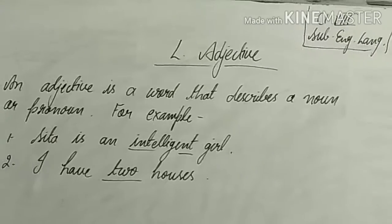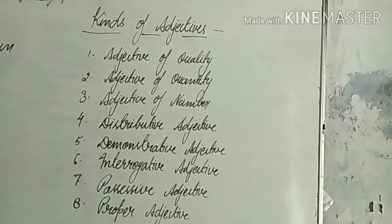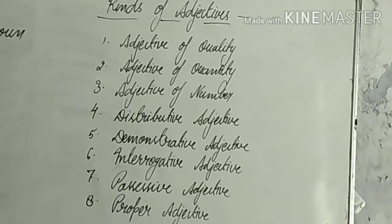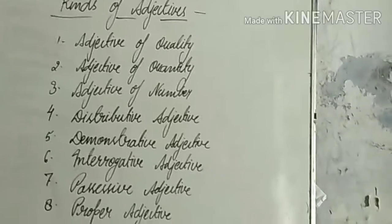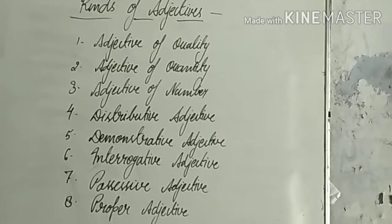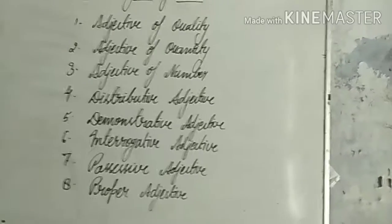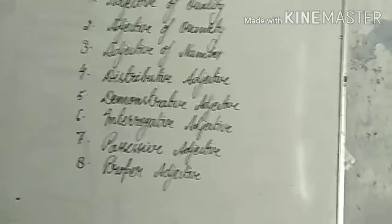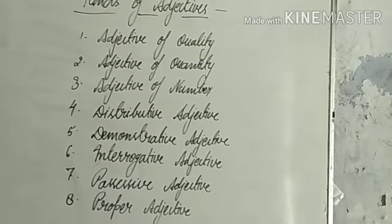Then I will give you the next topic: kinds of adjectives. There are eight types of adjectives: adjective of quality, adjective of quantity, adjective of number, distributive adjective, demonstrative adjective, interrogative adjective, possessive adjective, and proper adjective.